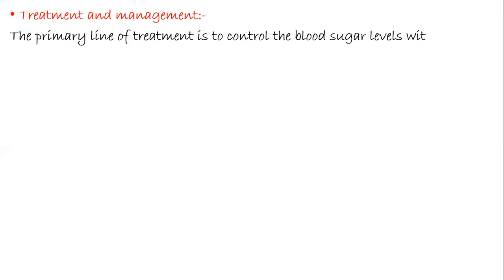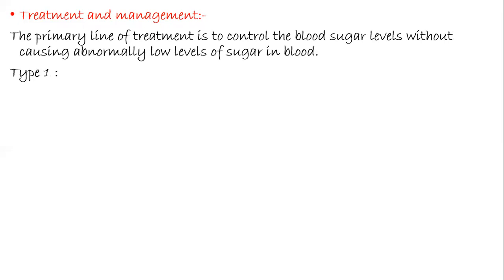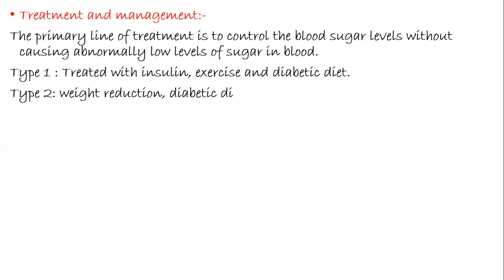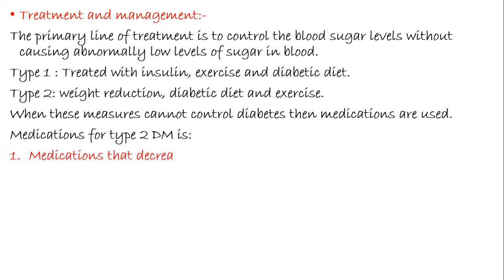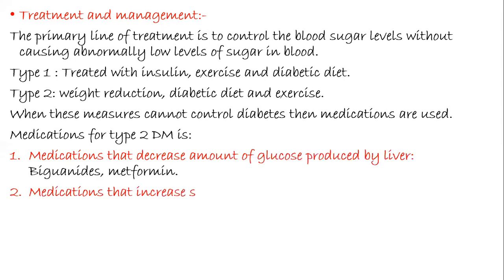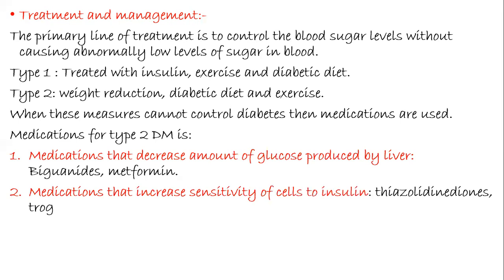Now we'll look at treatment and management. The primary goal is to control blood sugar without causing abnormally low levels. Type 1 treatment includes insulin, exercise, and a diabetic diet. Type 2 includes weight reduction, a diabetic diet, and exercise. When these measures cannot control diabetes, medications are used. Medications for type 2 include biguanides such as metformin to decrease glucose produced by the liver, thiazolidinediones such as pioglitazone and rosiglitazone to increase cell sensitivity to insulin, and newer medications like pramlintide and exenatide. With this, we have completed diabetes mellitus. Thank you.